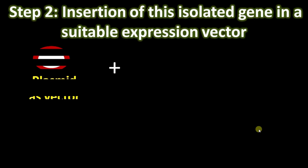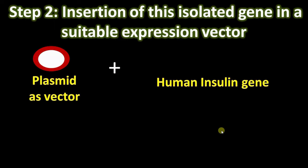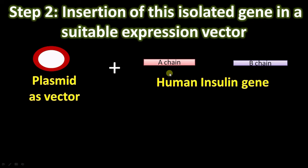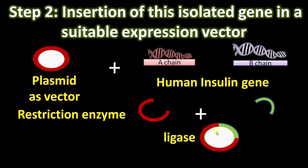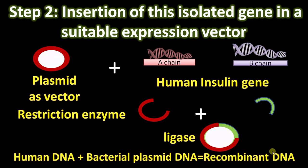Step two: insertion of the isolated gene into a suitable expression vector. We have a plasmid vector and the human insulin gene — the gene for A chain and gene for B chain. We will use two separate cultures for A gene and B gene. Using a restriction enzyme, we make a cut in the vector, the gene is inserted, we get a recombinant DNA molecule, and the cut ends are sealed with ligase enzyme. Human DNA joined to bacterial plasmid DNA forms a recombinant DNA — that is why this technology is called recombinant DNA technology.